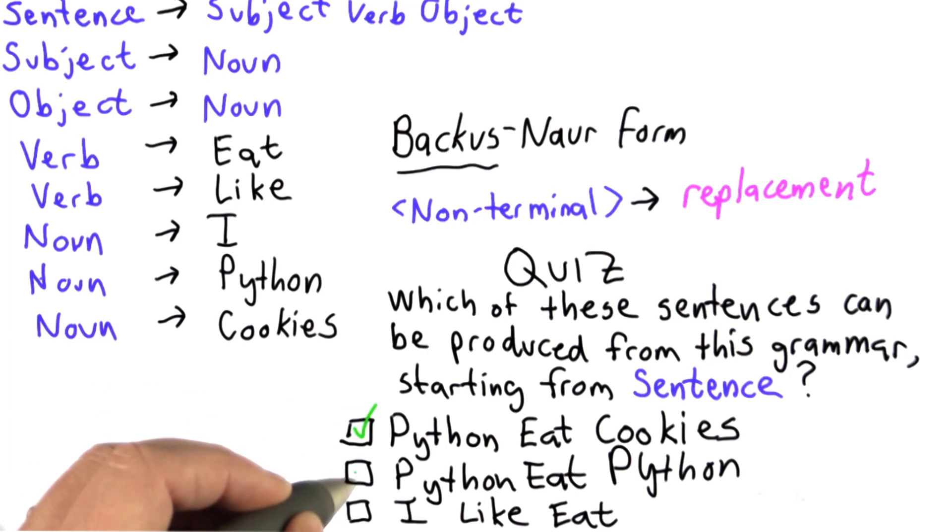The answer is the first two can be produced, the third one cannot. The way to see that is to follow the rules.